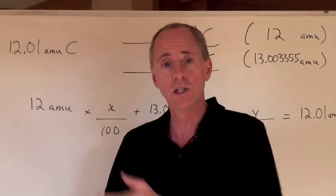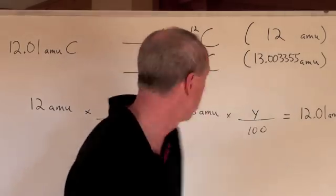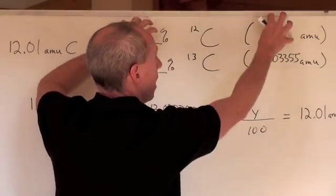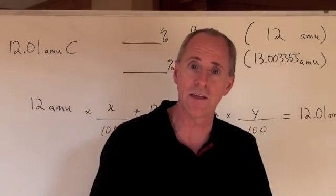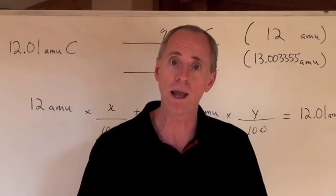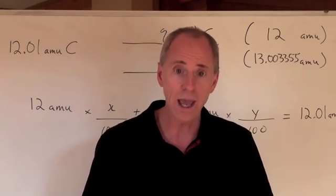We saw the step-by-step process that you could do. You just take the percent over a hundred times the mass, percent over a hundred times the mass, and when you add those two together you'll be able to get the atomic weight or the average of the AMUs.